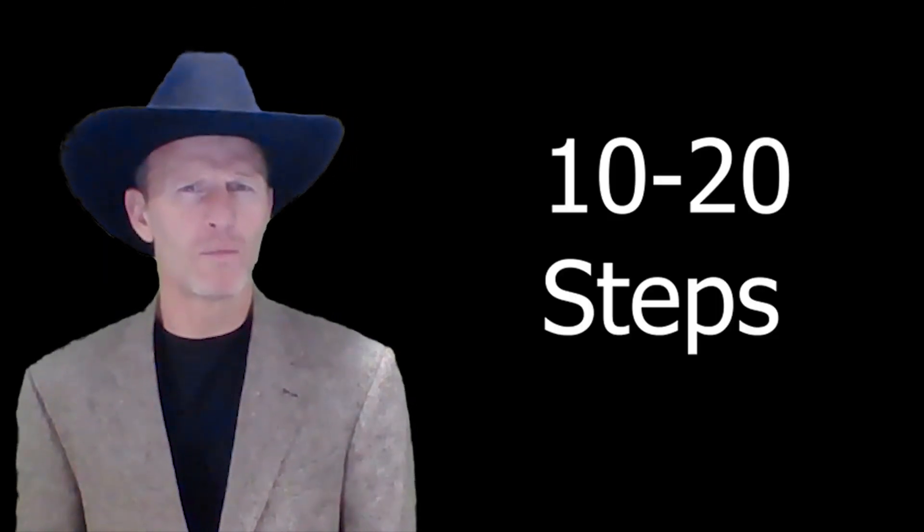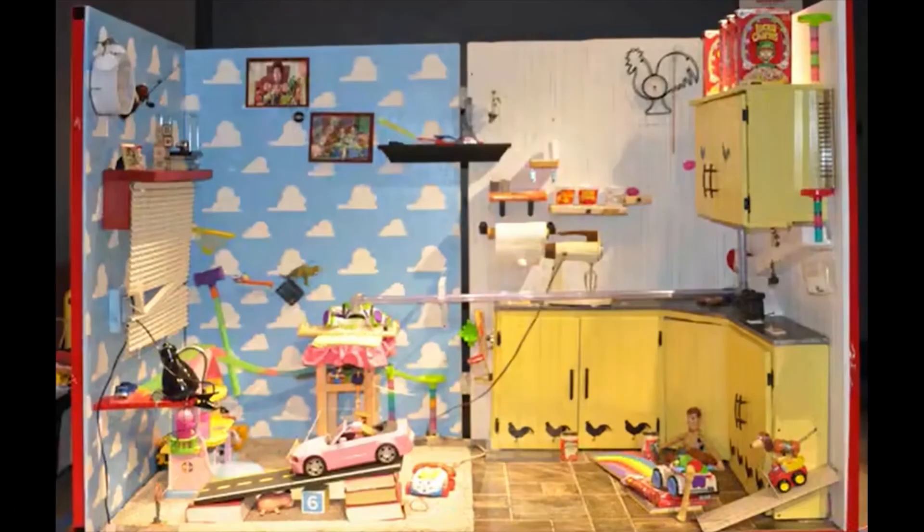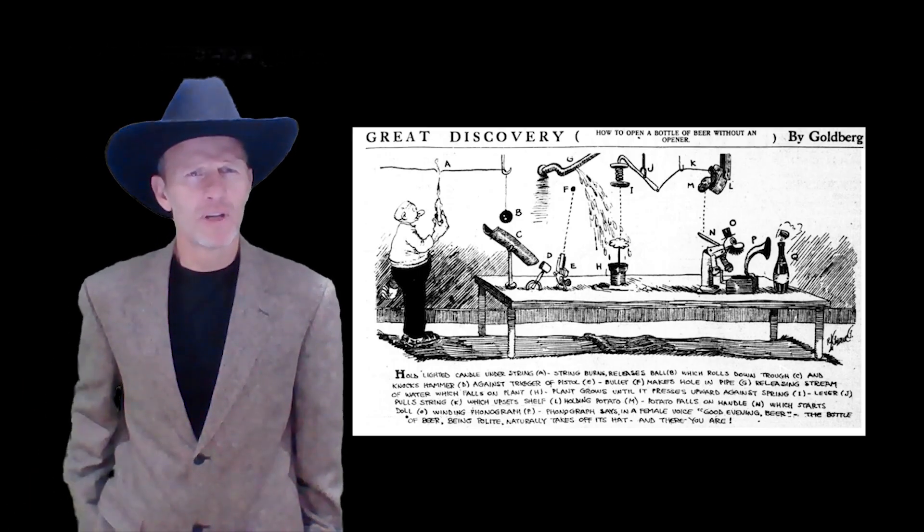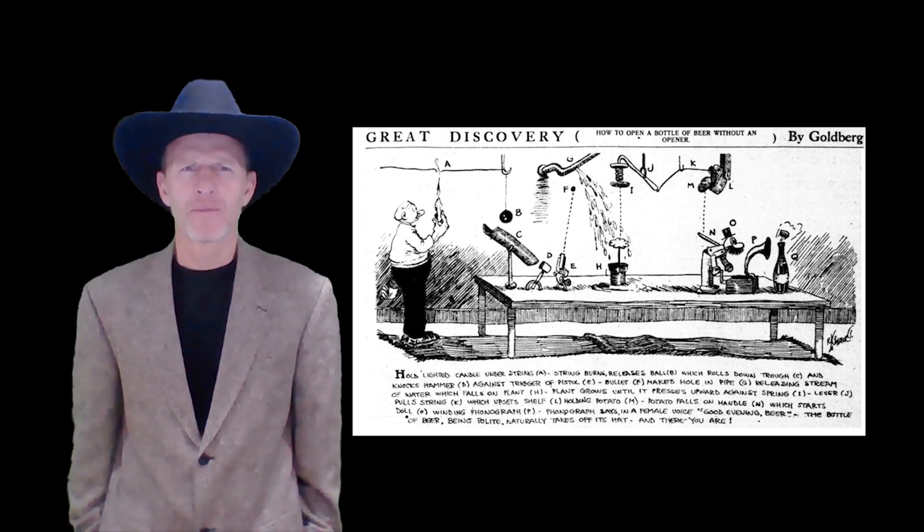20-step Rube Goldberg machine that at the end drops a bar of soap into someone's hands. This is free to try, and all you have to do is build a machine, get it working, and film it in one